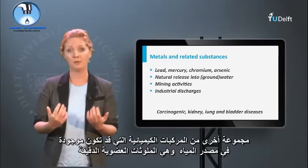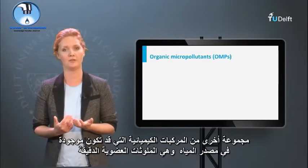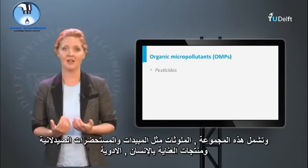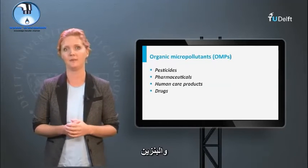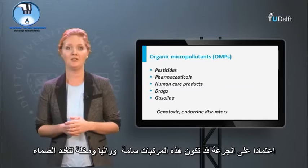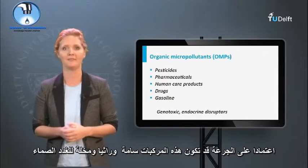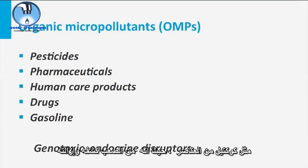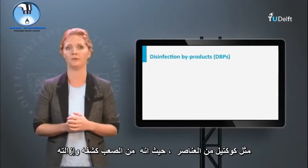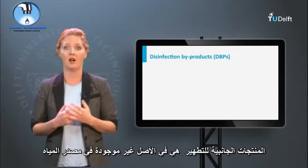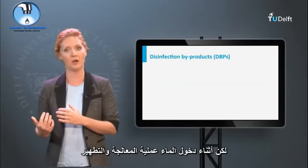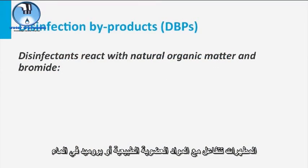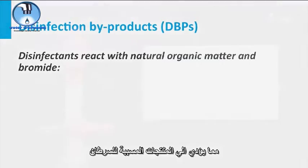Another group of chemical compounds that may be present in source water are organic micropollutants, shortly called OMPs. This group includes contaminants such as pesticides, pharmaceuticals, human care products, drugs, and gasoline. Depending on the dose, these compounds may be genotoxic and endocrine disrupting. A particular concern is the potential mixture of many different organic micropollutants — like a cocktail of substances — as it is difficult to detect and remove. Disinfection byproducts are originally not present in the source water but enter the water during treatment for disinfection, as disinfectants react with natural organic matter or bromide in the water, resulting in carcinogenic byproducts.